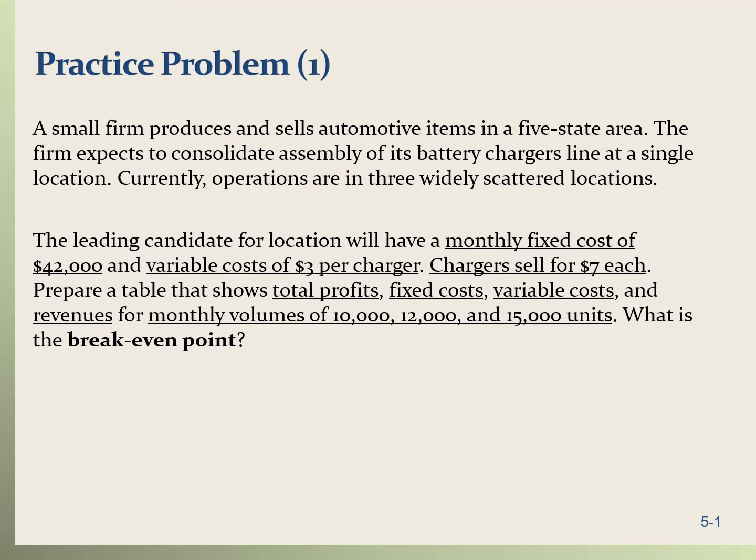Practice Problem 1. A small firm produces and sells automotive items in a five-state area. The firm expects to consolidate assembly of its battery chargers at a single location. Currently, operations are in three widely scattered locations. The leading candidate location will have a monthly fixed cost of $42,000 and a variable cost of $3 per charger. Chargers sell for $7 each.